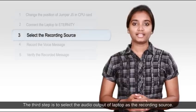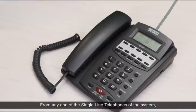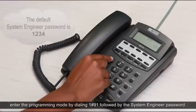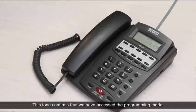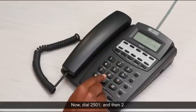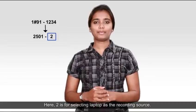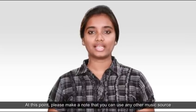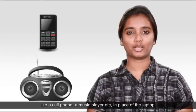The third step is to select the audio output of laptop as a recording source from any one of the single line telephones of the system. Enter the programming mode by dialing one hash nine one followed by the system engineer password. This tone confirms that we have accessed the programming mode. Now dial 2501 and then 2. Here 2 is for selecting laptop as a recording source. At this point please make a note that you can use any other music source like a cell phone, a music player, etc. in place of the laptop.